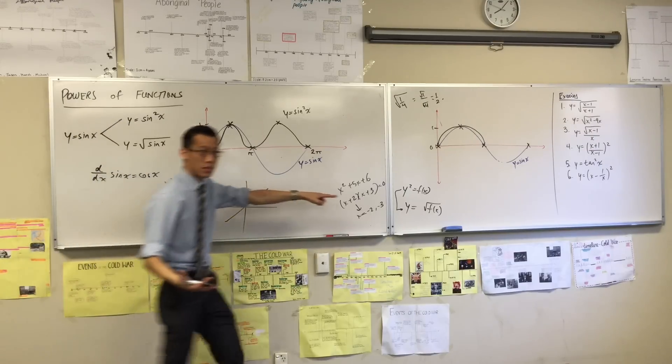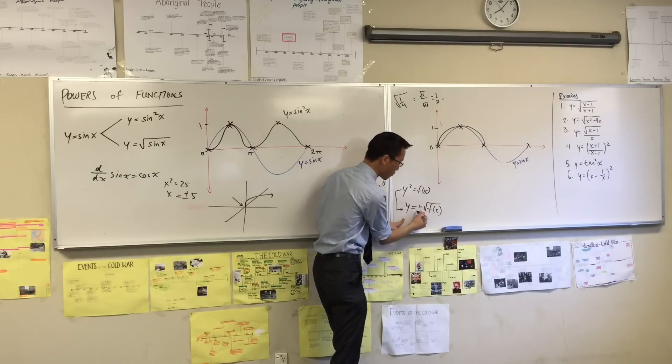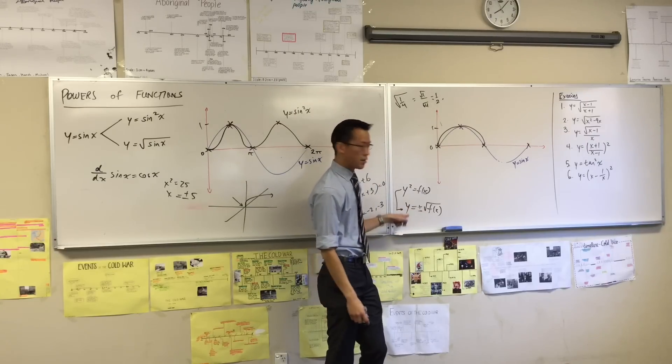So over here, same deal, right? If this, you want to write in this form, then you have to have a plus minus, right? So therefore, I've asked you to draw y equals the square root of sin x.